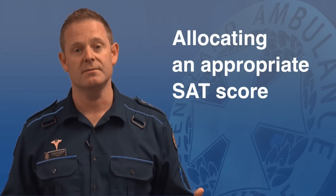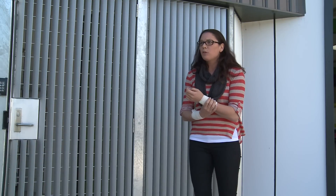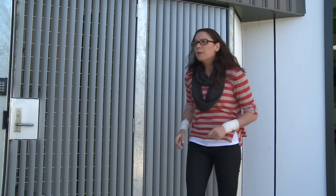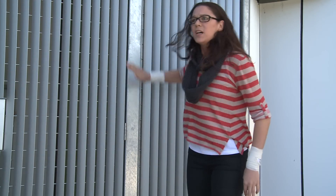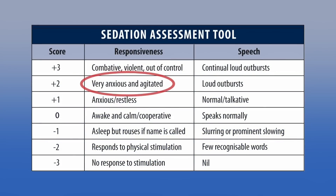Let's now observe a patient's behaviour and allocate an appropriate STAT score. Based on the objective descriptors, I've identified that this patient is anxious, agitated, aggressive, and has regular loud outbursts. Therefore, I've awarded a STAT score of plus three.